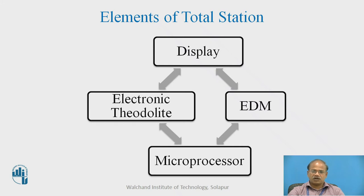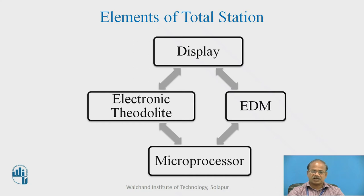One of the very powerful electromagnetic distance measuring instruments has to be a part of the total station. This EDM will transmit electromagnetic waves; they will strike a prism or reflector and come back to the instrument. The phase difference of the emitting wave and returning wave will be calibrated to give the distance of the target from the instrument station.